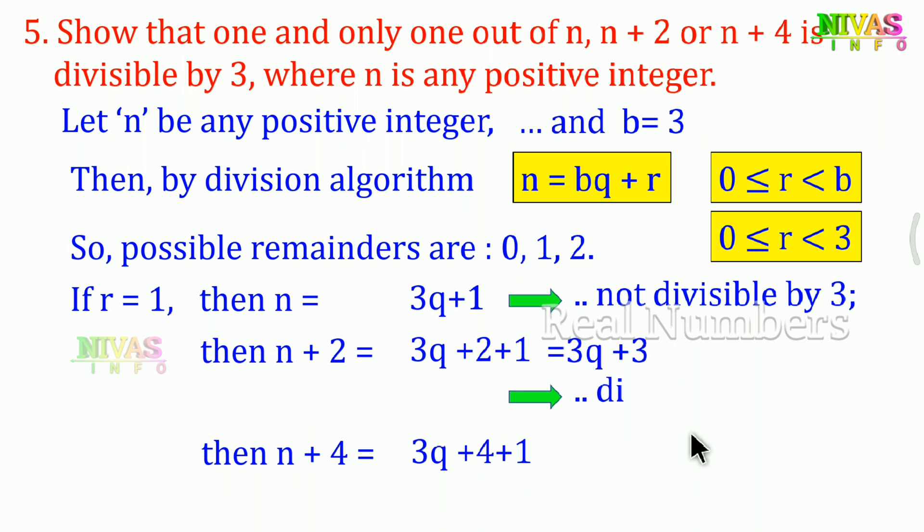For n+4: n+4 = 3q + 1 + 4 = 3q + 5. With q=3: 9+5 = 14, which is not divisible by 3. So when remainder is 1, only n+2 is divisible by 3.